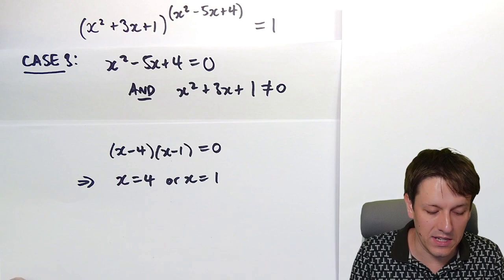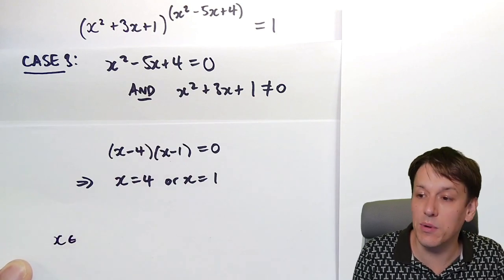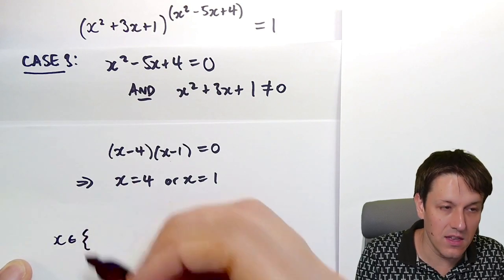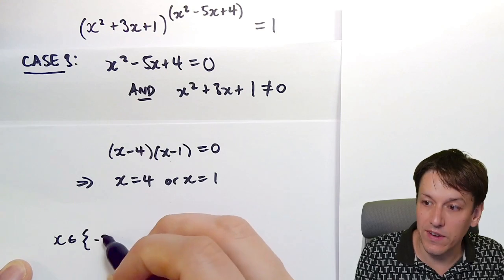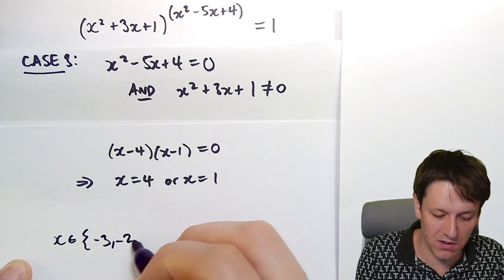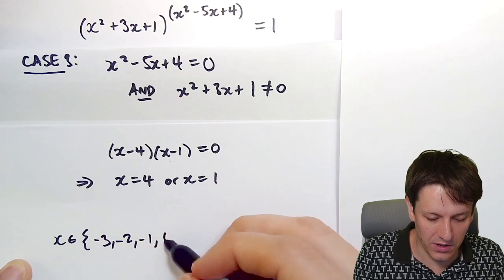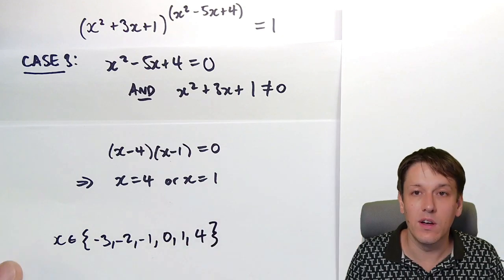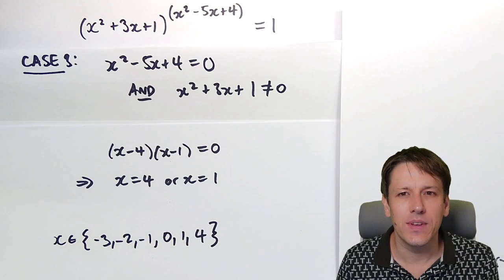So we've found 6 possible solutions. Putting all the answers together, x is one of the values: minus 3, minus 2, minus 1, 0, 1, or 4. And that's the answer to the problem.